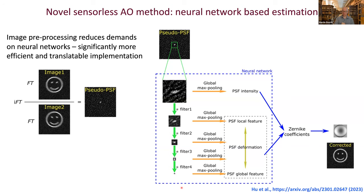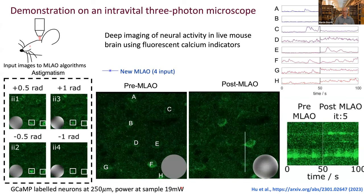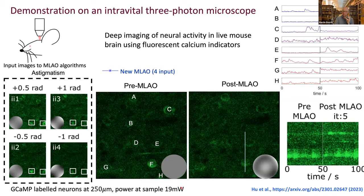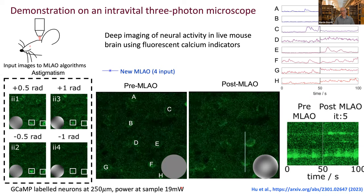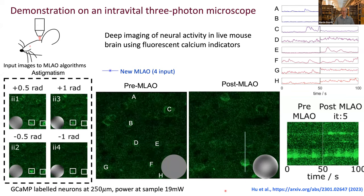One very challenging application is three-photon nonlinear fluorescence microscopy for deep imaging inside living mouse brains, where we look at fluorescent calcium indicators — dyes that flash on and off to indicate neural activity. We got this machine learning-enabled adaptive optics working in this very low signal-level situation. In the results, you can see videos of neural activity with cells flashing on and off as they fire. With aberration correction applied — shown on the right — we get much clearer images and can extract time traces of neural signals.